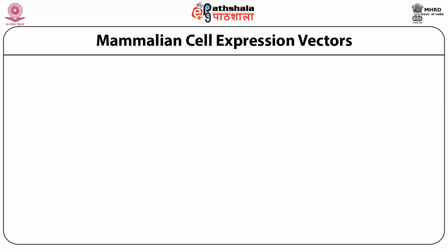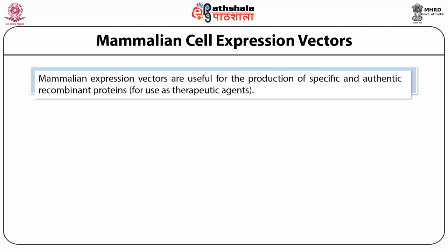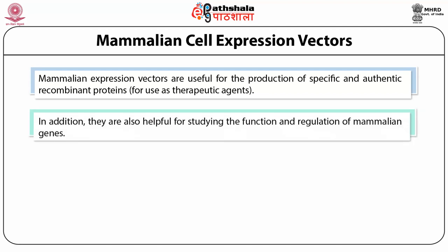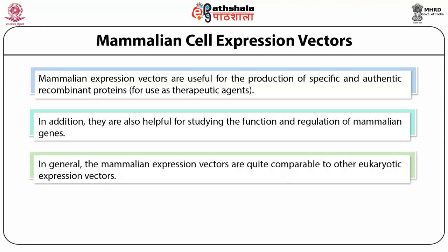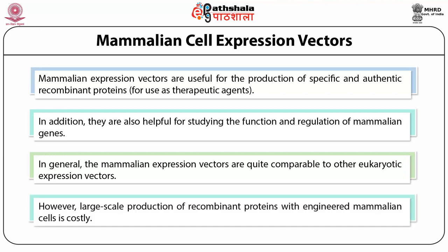Mammalian cell expression vectors are useful for the production of specific and authentic recombinant proteins for use as therapeutic agents. In addition, they are helpful for studying the function and regulation of mammalian genes. In general, mammalian expression vectors are quite comparable to other eukaryotic expression vectors. However, large-scale production of recombinant proteins with engineered mammalian cells is costly.